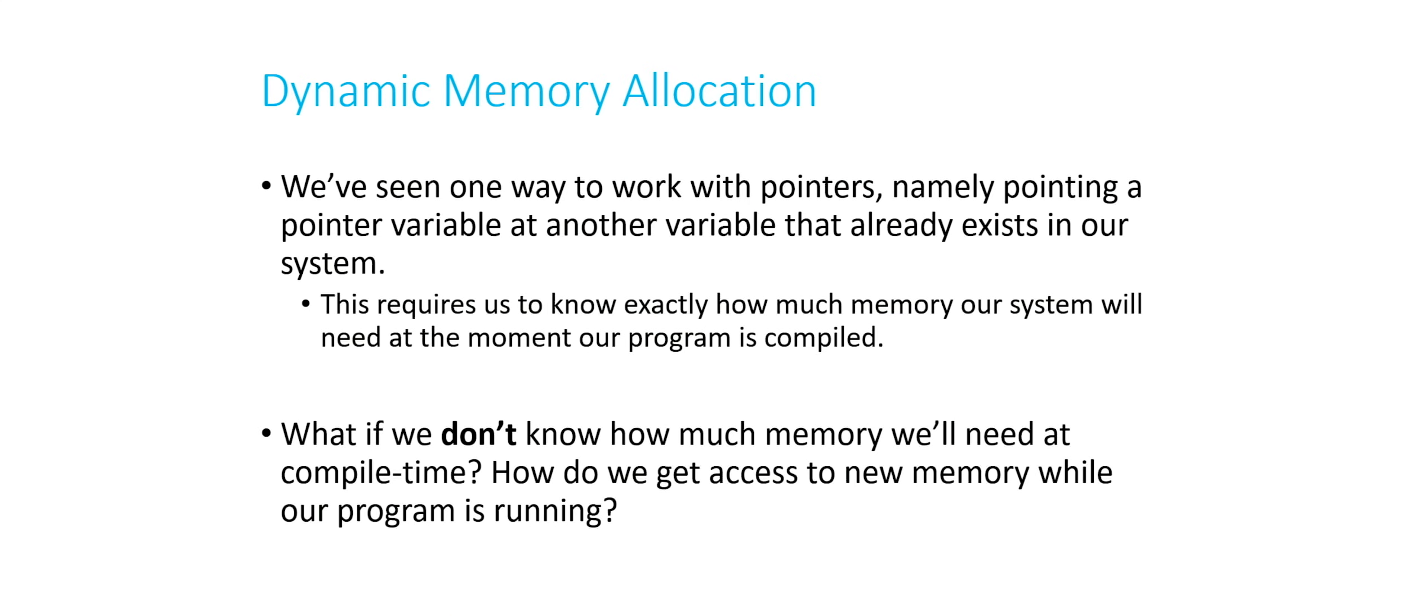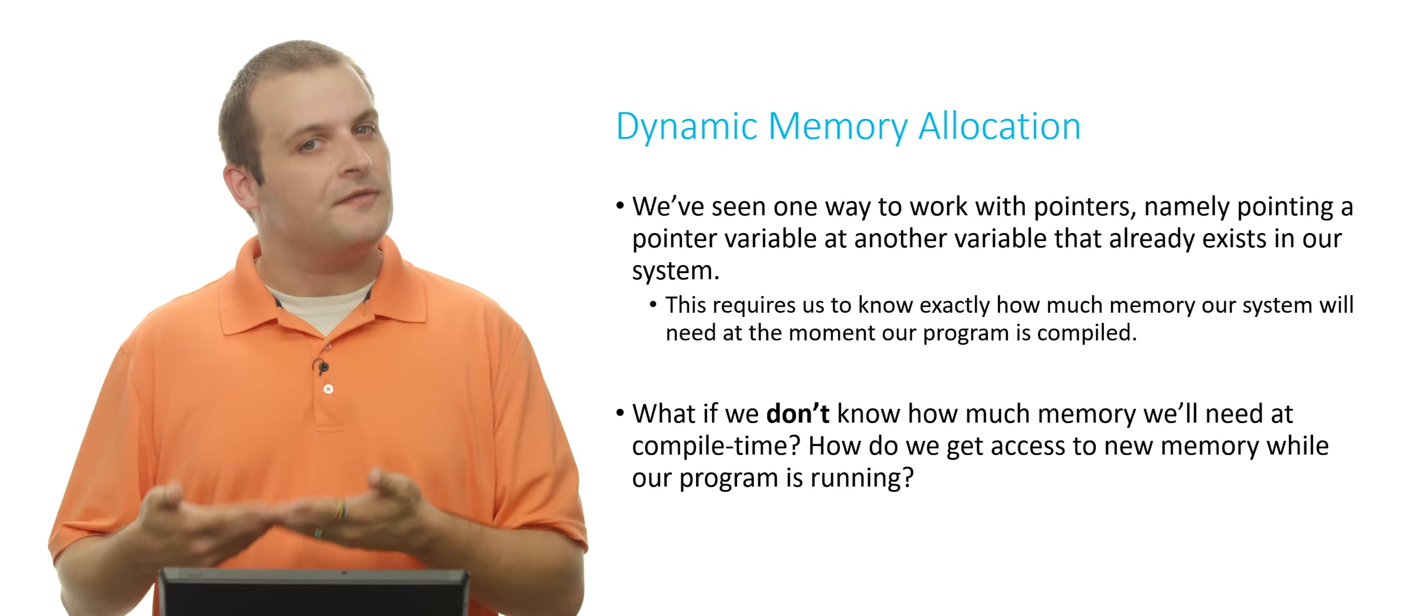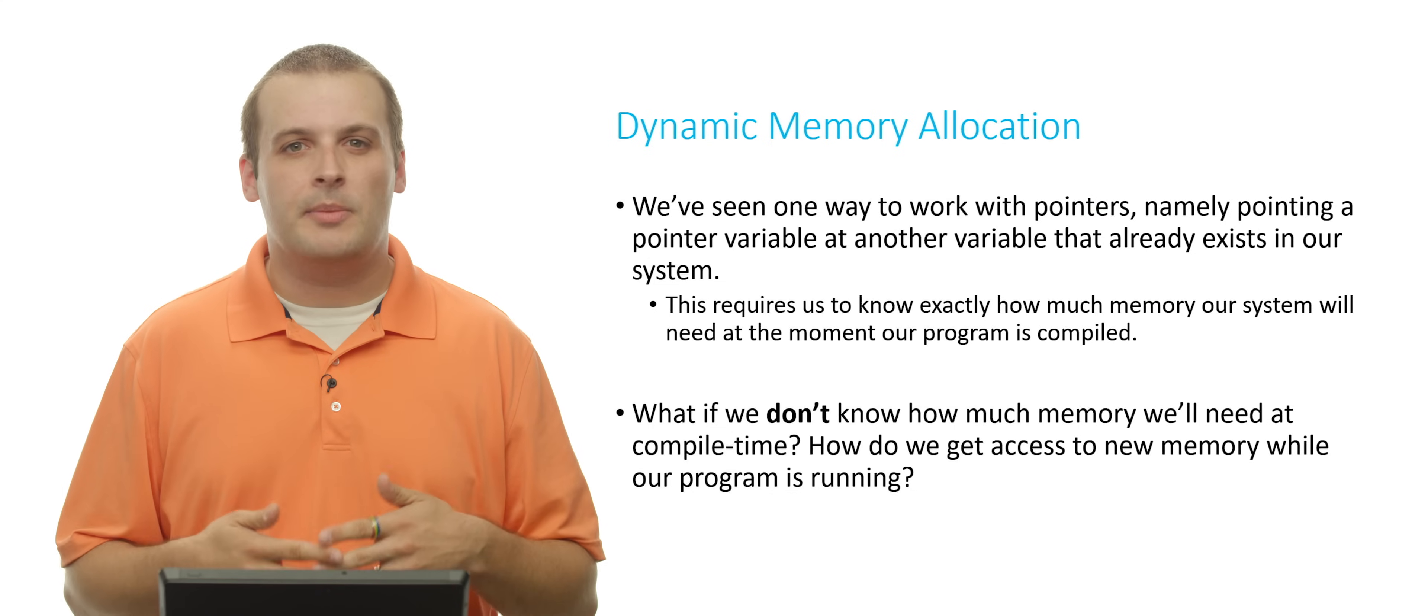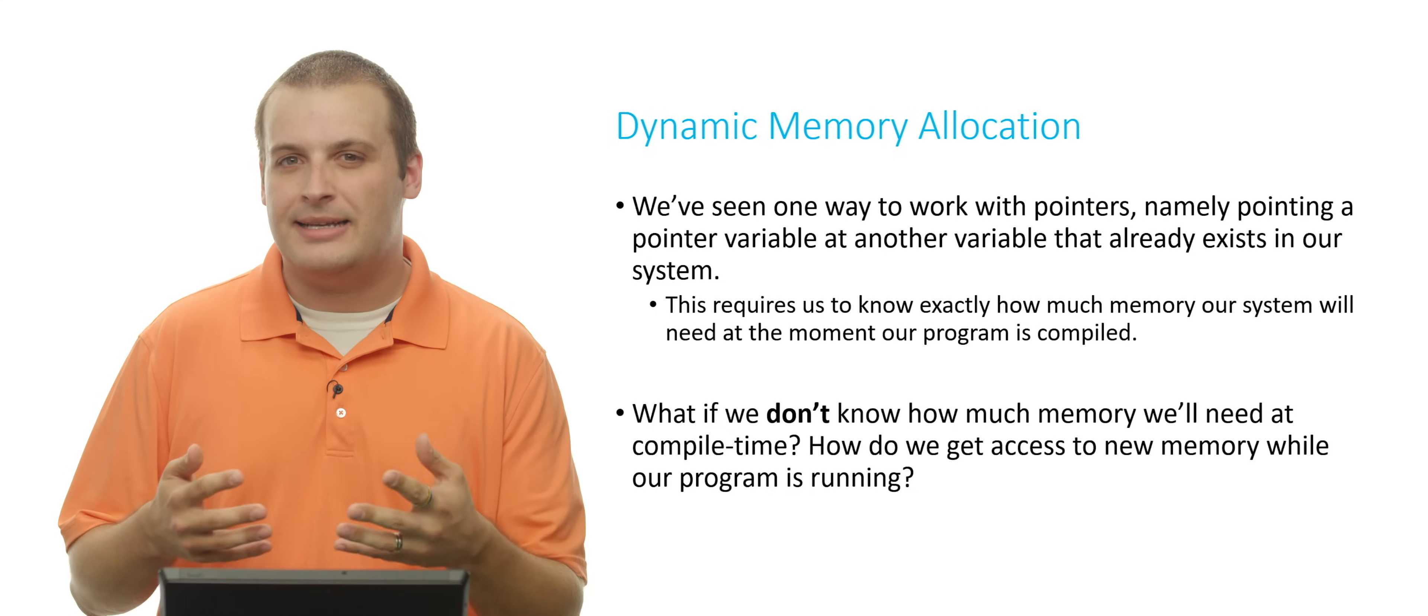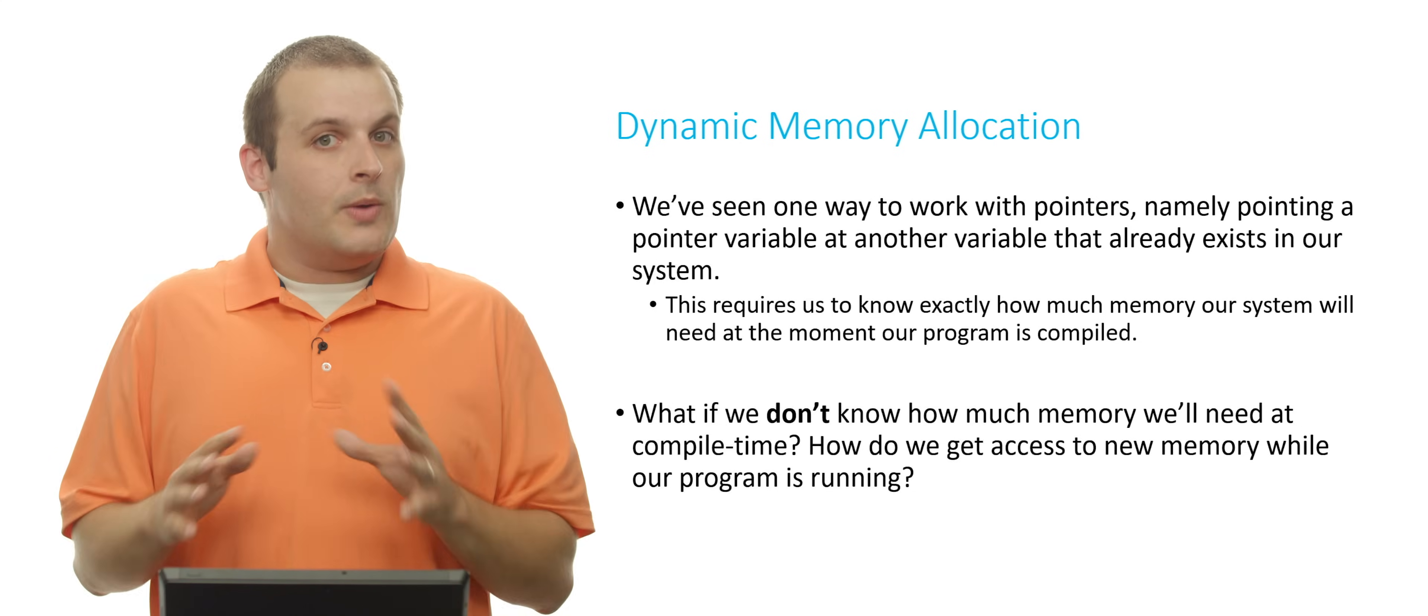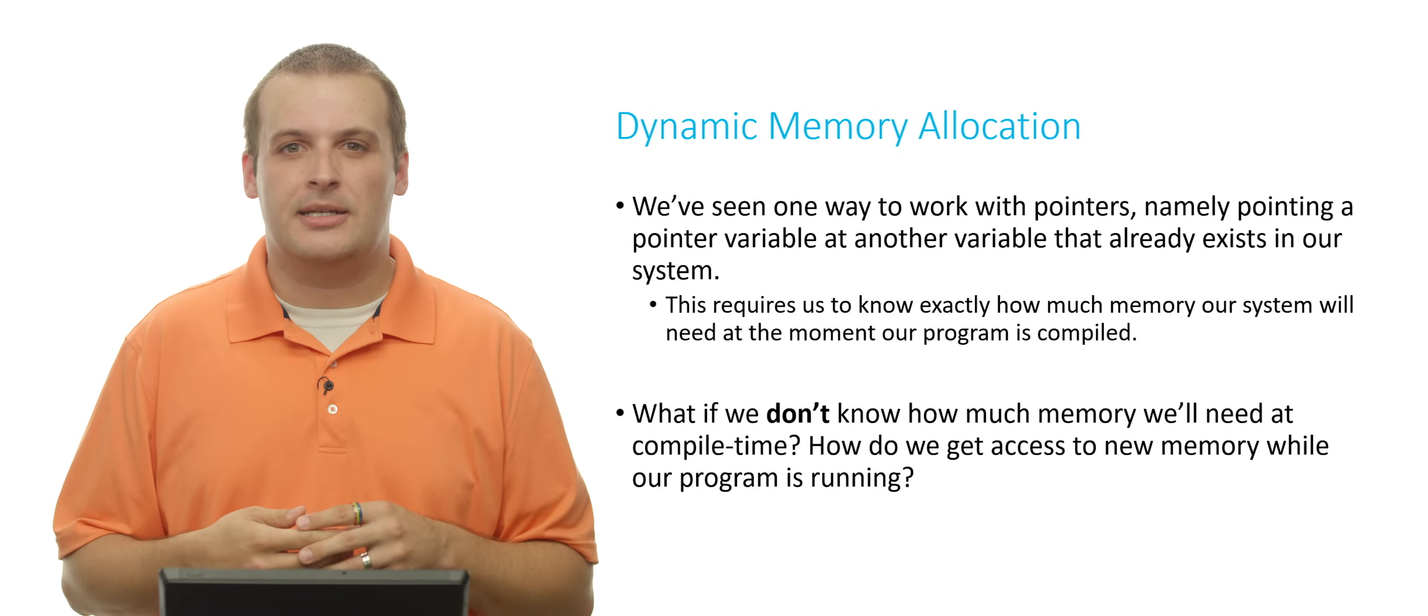Without further ado, let's get started. Now, we've already seen how to work with pointers before, but typically we've only done it in the context of pointing a pointer variable that we declare statically at another variable that already exists. You may recall from our video on pointers, we had a line like int x equals 5, and then we would say int star px equals ampersand x. But that's the only way we've seen how to work with pointers, and that's static pointer usage, basically.